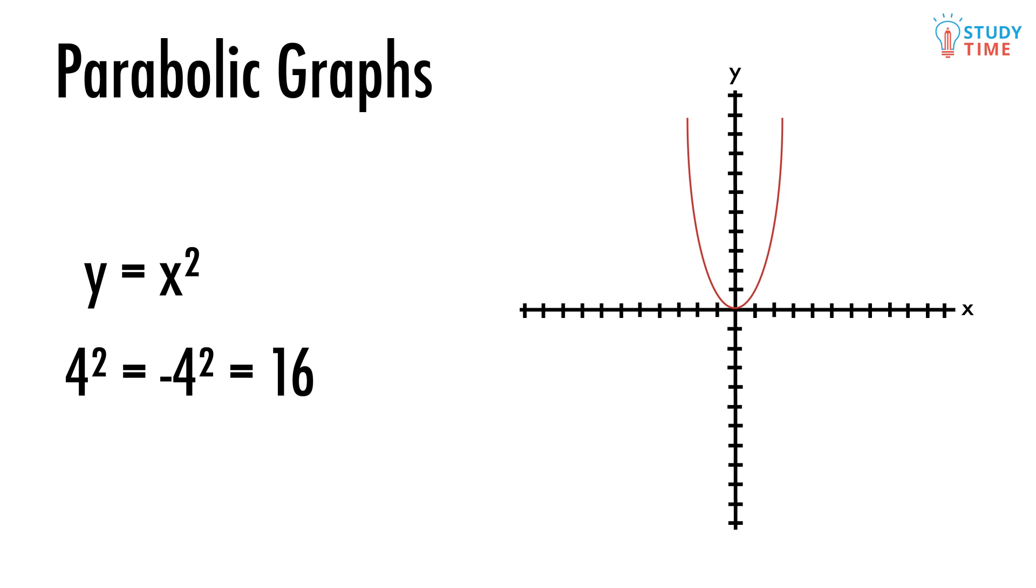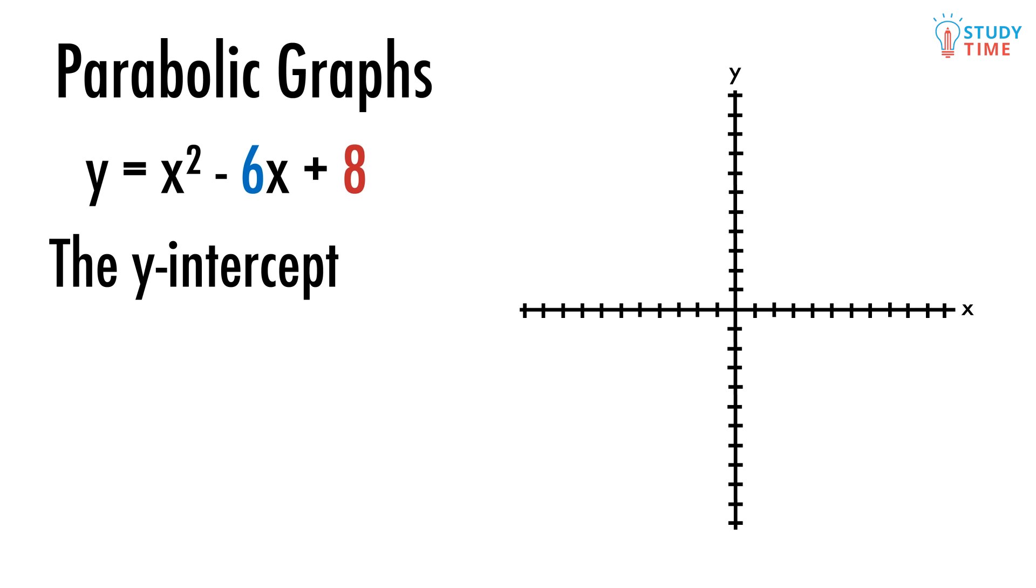Drawing parabolas from equations is easy. Let's use the quadratic y equals x squared minus 6x plus 8. Like with linear equations, that lonely number on the end is the constant and tells us the y-intercept, which here we can see is y equals 8.